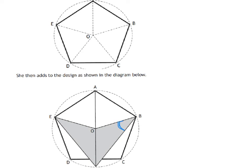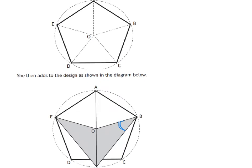This brings us on to past paper questions. This one has a pentagon drawn in a circle. Starting with the fact of a pentagon in a circle, a full turn in the middle makes 360. So this angle here is 360. If you split that into 5, you get 72. So the angle at the centre of your triangles are all 72.